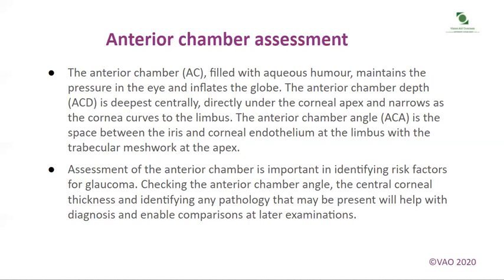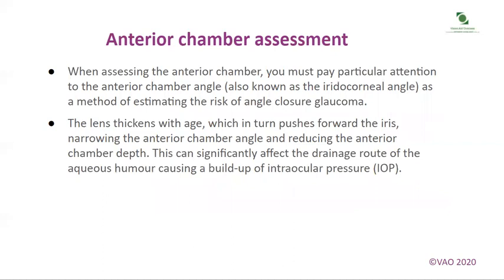Assessment of the anterior chamber is important in identifying risk factors for glaucoma. Checking the anterior chamber angle, the central corneal thickness and identifying any pathology that may be present will help with diagnosis and enable comparisons at later examinations. You must pay particular attention to the anterior chamber angle, also known as the iridocorneal angle, as a method of estimating the risk of angle closure glaucoma. The lens thickens with age, which in turn pushes forward the iris, narrowing the anterior chamber angle and reducing the anterior chamber depth. This can significantly affect the drainage route of the aqueous humour, causing a build-up of intraocular pressure.